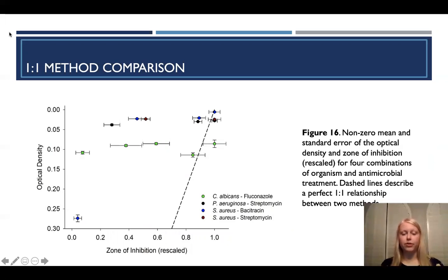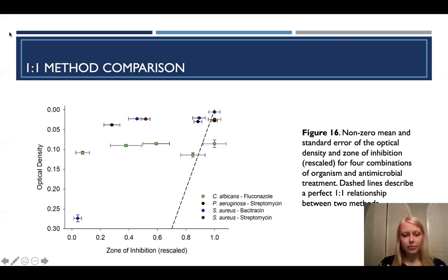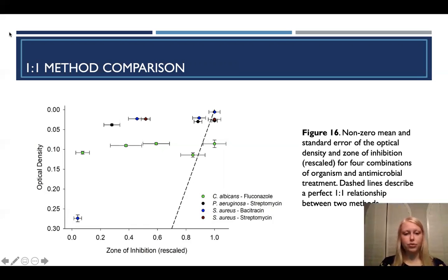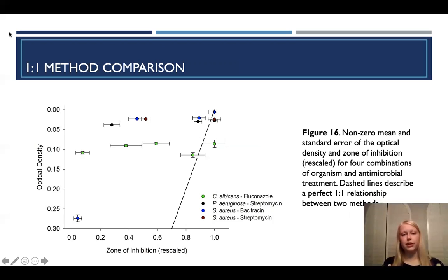Another way we compared these two methods is using a one-to-one method comparison. This one-to-one perfect line would show a complete and perfect correspondence between the two methods — the ideal relationship. However, the data points indicate that at low concentrations of antimicrobial agent, the BMD method is much more sensitive, showing inhibition in optical density where the MTS method using zone of inhibition does not. At higher concentrations, the results are much closer to the one-to-one line, showing a much more equal sensitivity between the two methods.